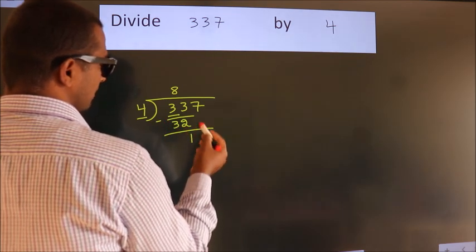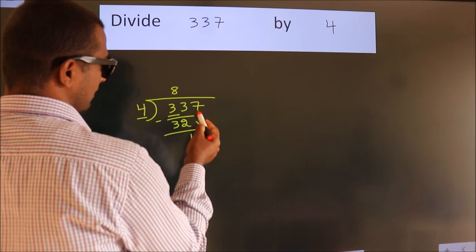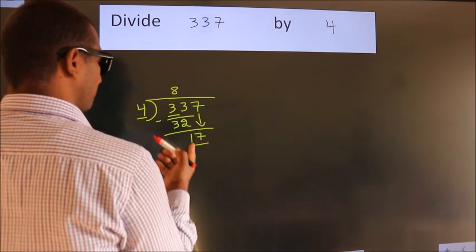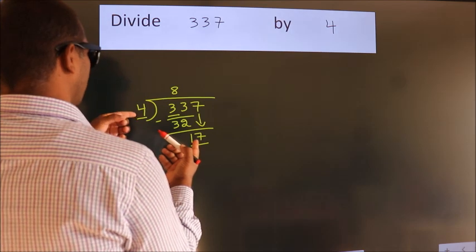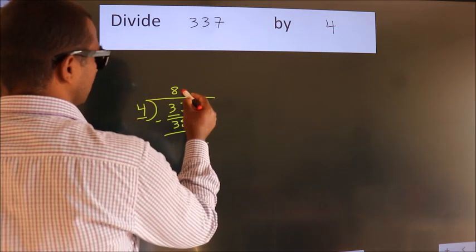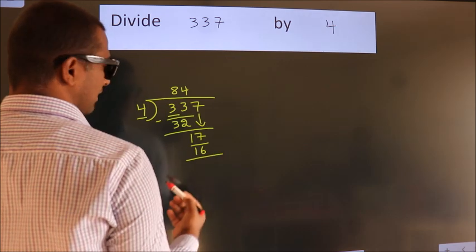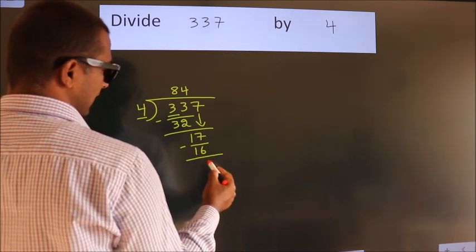After this, bring down the beside number. So, 7 down. So, 17. A number close to 17 in 4 table is 4, 4, 16. Now, we subtract. We get 1.